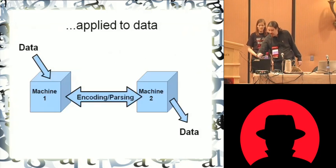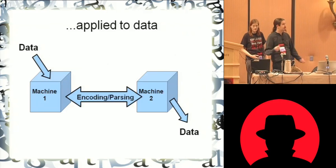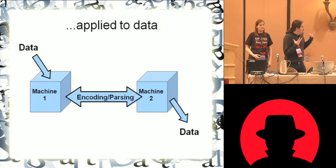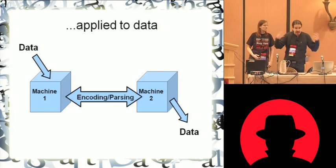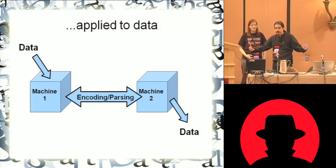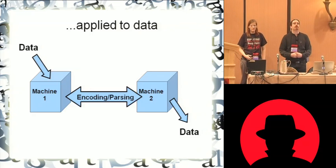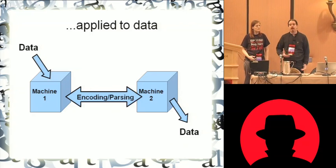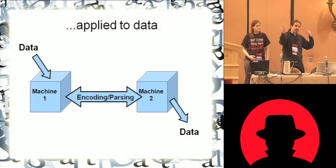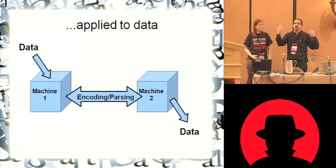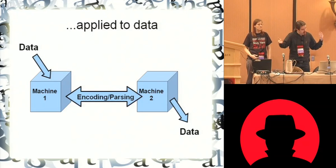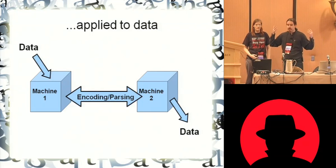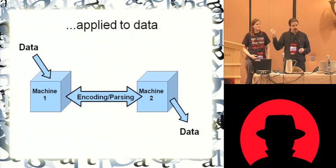This is analogous to the way computers talk. We've got the actual data, and then how it is encoded for delivery over the network — there can be corruption there. Now, the recipient machine hears it, parses it, and then turns it into data that it's going to use in itself.